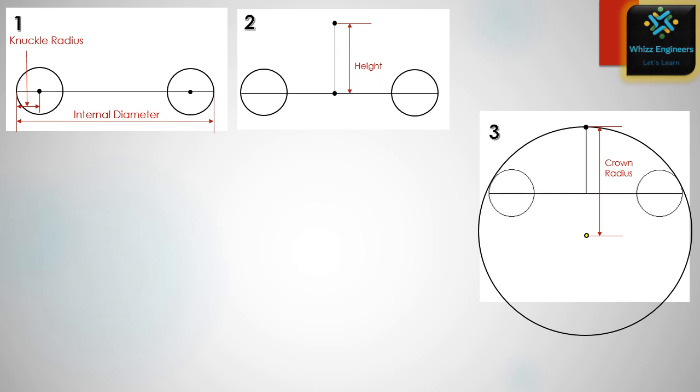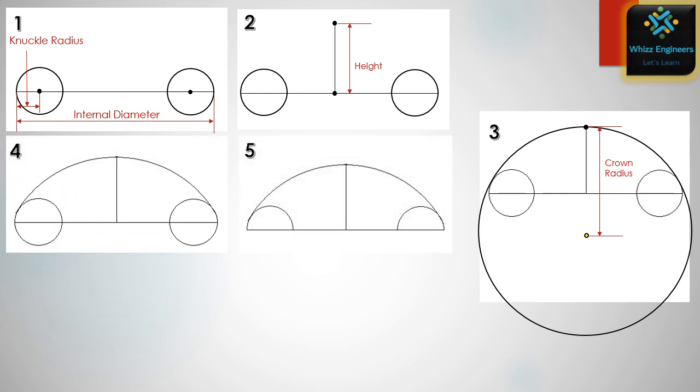Then we have to erase the lower portion of this big circle because it is not required here. Then we have to erase the lines which are not required. Then we will get this one and this will be our TORI spherical head template without straight face.